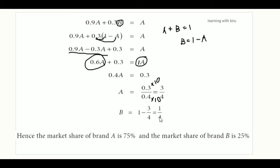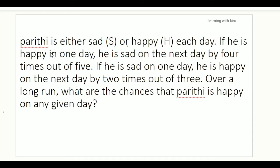Next problem: we are given clues about happy and sad states. If they are sad, they are sad 4 out of 5 times. If they are happy, they are happy 2 out of 3 times. So we have two clues: 4 out of 5 and 2 out of 3. In the long run, they are happy 2 out of 3 times. That is our question.